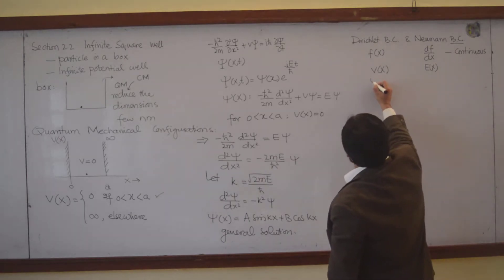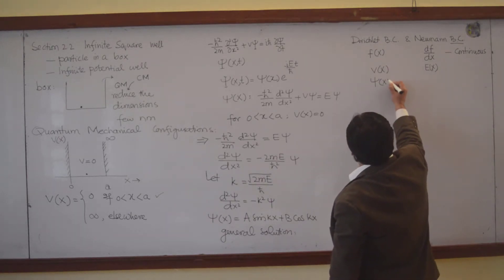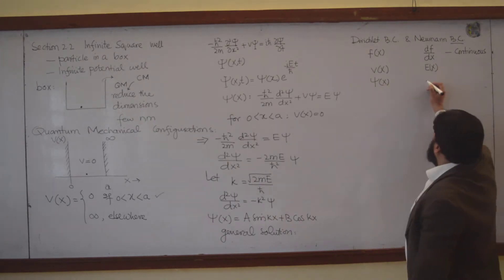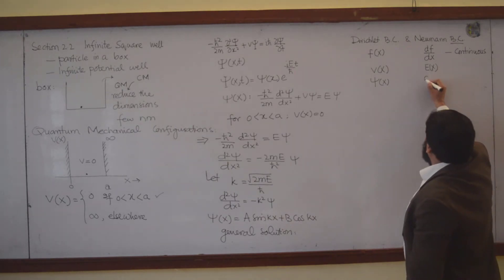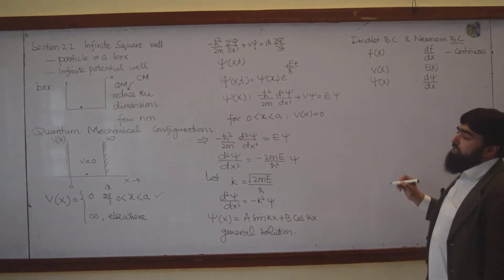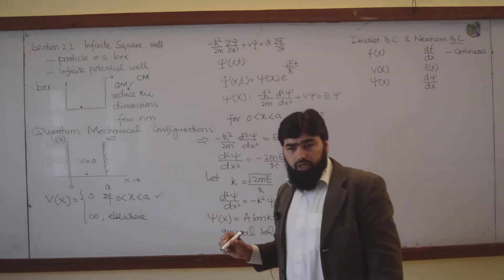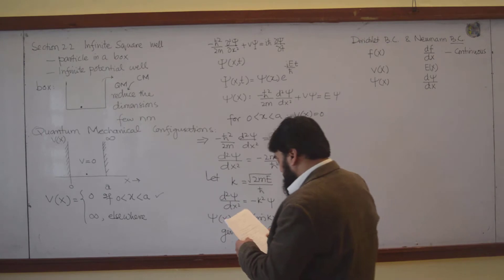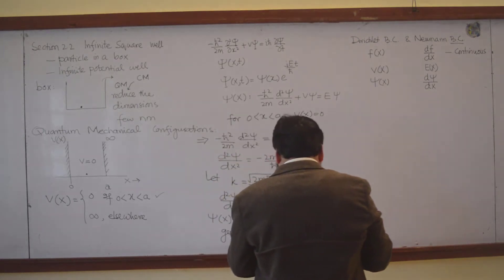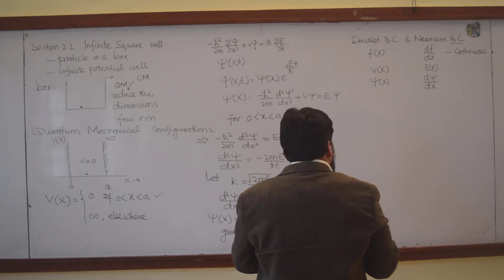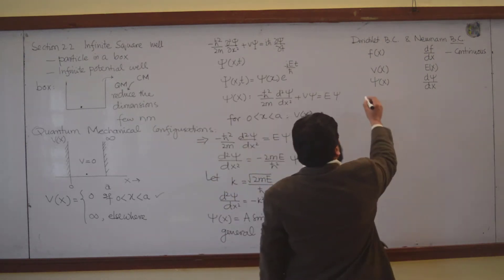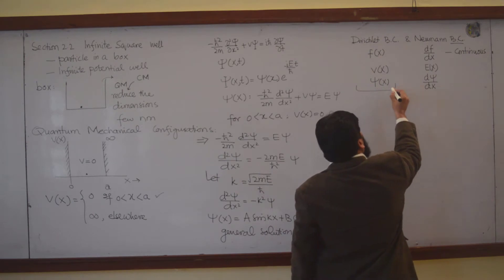Here in our example, we will say that psi(x) is continuous on a boundary, or d psi over dx will remain continuous on a boundary. So these are the two boundary conditions, and in our problem we will only apply the Dirichlet boundary condition.